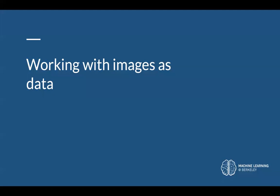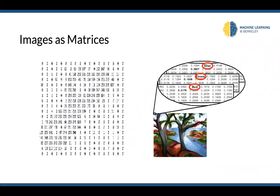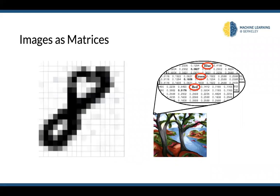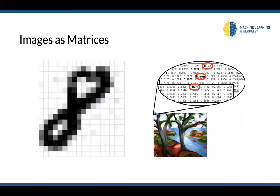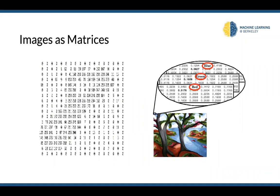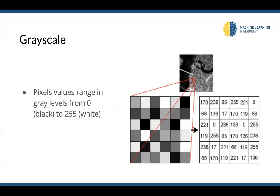Before delving into CNN-based models, let's answer a crucial question: how do we represent images to a computer? Images are represented digitally as matrices. An image has an associated height and width, which you can view as rows and columns. Each value in the matrix represents some brightness, from white being the brightest to black being the darkest. This is how grayscale images are represented. The brightness value ranges from 0 to 255, allowing each pixel to be represented by a single byte — eight bits for 256 possible values.